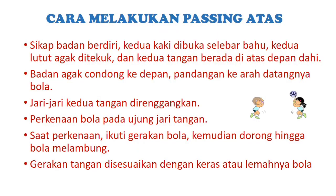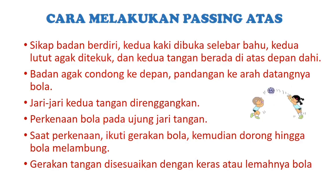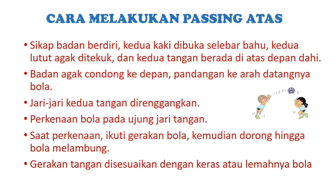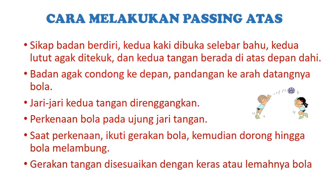Yang kedua adalah cara melakukan passing atas. Pertama, sikap badan berdiri, kedua kaki dibuka selebar bahu, kedua lutut agak ditekuk, dan kedua tangan berada di atas depan dahi. Kedua, badan agak condong ke depan, pandangan ke arah datangnya bola. Ketiga, jari-jari kedua tangan diregangkan. Keempat, perkenaan bola pada ujung jari tangan. Kelima, saat perkenaan, ikuti gerakan bola kemudian dorong hingga bola melambung. Keenam, gerakan tangan disesuaikan dengan keras atau lemahnya bola.